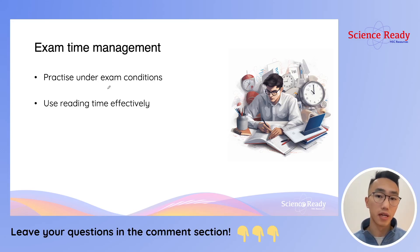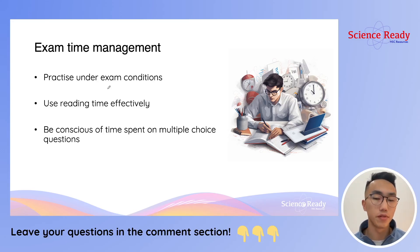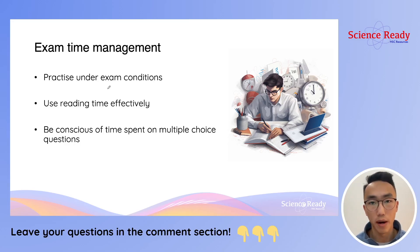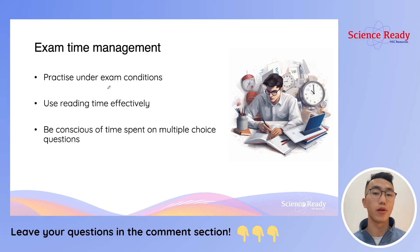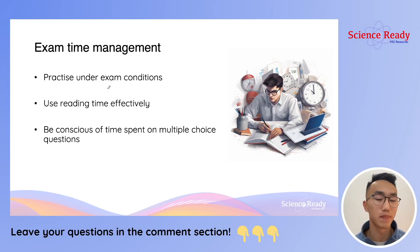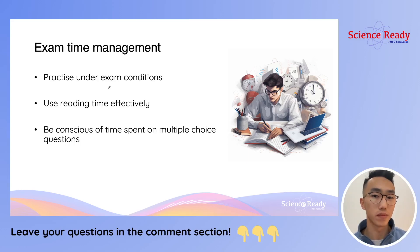Although five minutes isn't very much time compared to the whole exam, using your reading time effectively will make a significant difference in how you tackle the exam and your overall time management. For both HSC chemistry and physics, 20% of the exam is allocated to 20 multiple choice questions worth one mark each. Because the multiple choice section is only worth 20 marks, you need to be very conscious about how much time you're spending on it. NESA usually recommends spending 35 minutes on the entire multiple choice section, which I think is fair, but far too often students lose track of time and end up spending more than 35 minutes.